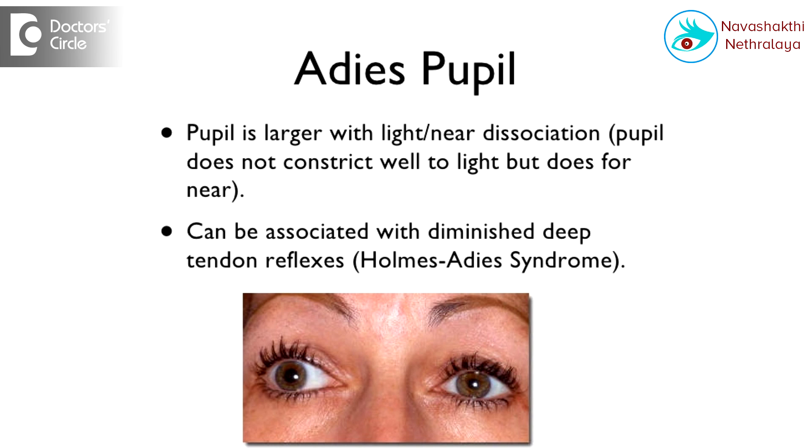The parasympathetic nerves are controlled by a ganglion in the eye called the ciliary ganglion, present behind the eye. In Adie's pupil, the pupil is permanently dilated, meaning the parasympathetic system is not working properly, so even in bright light the pupil does not constrict.